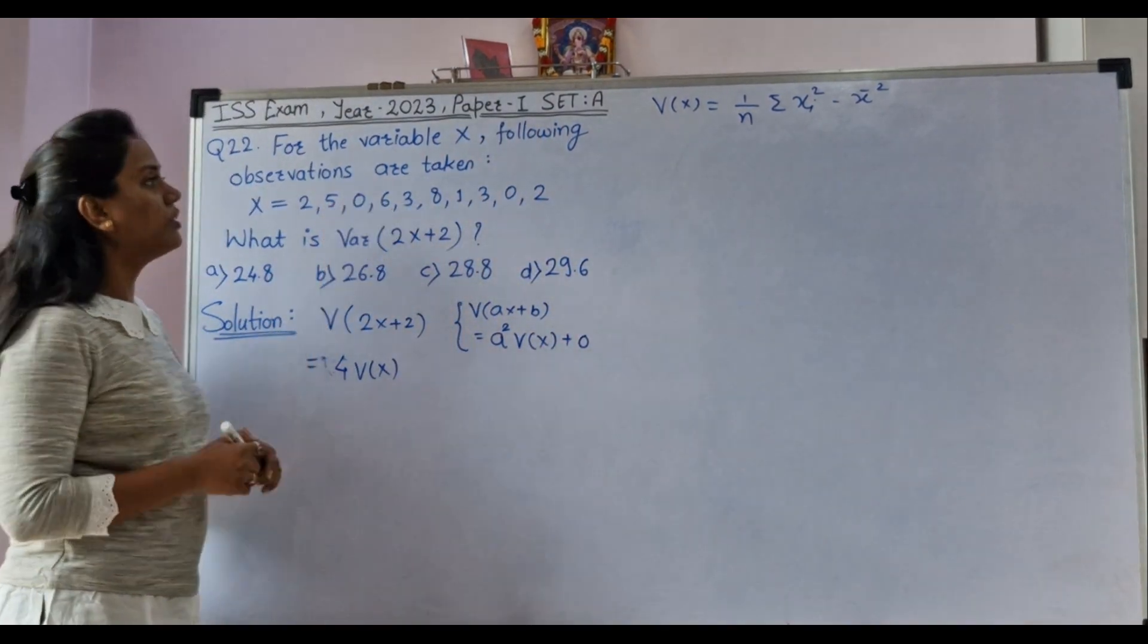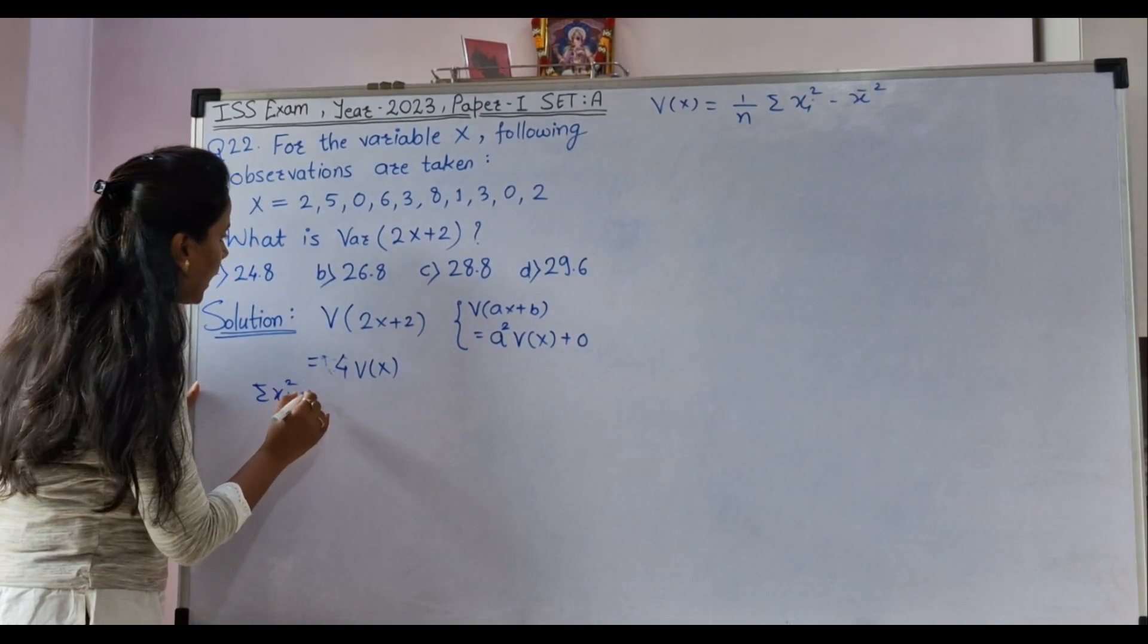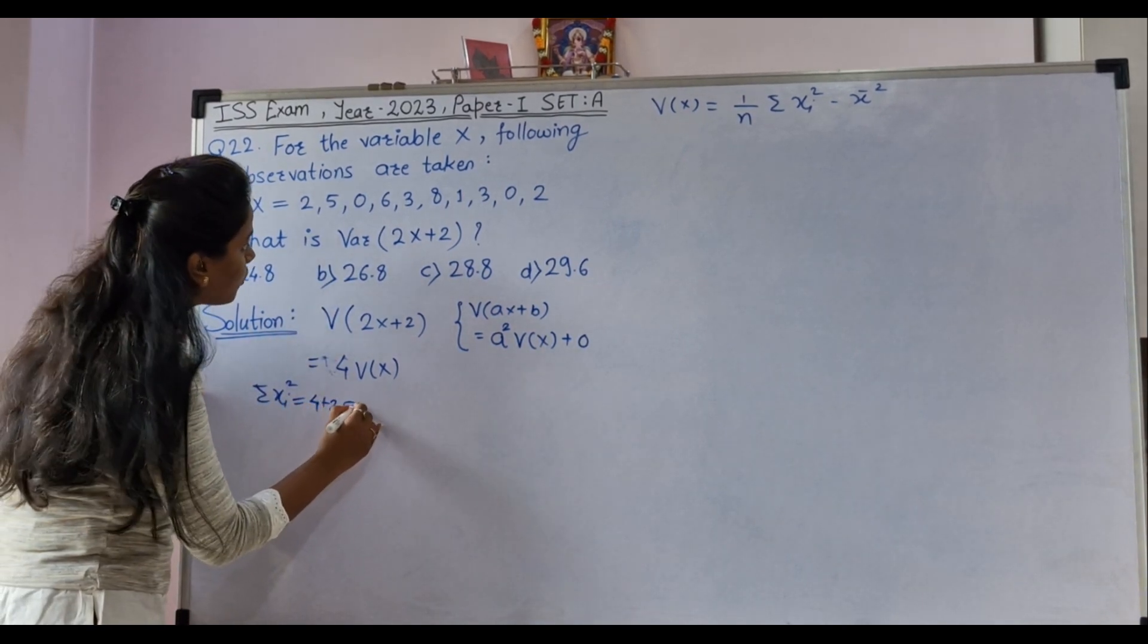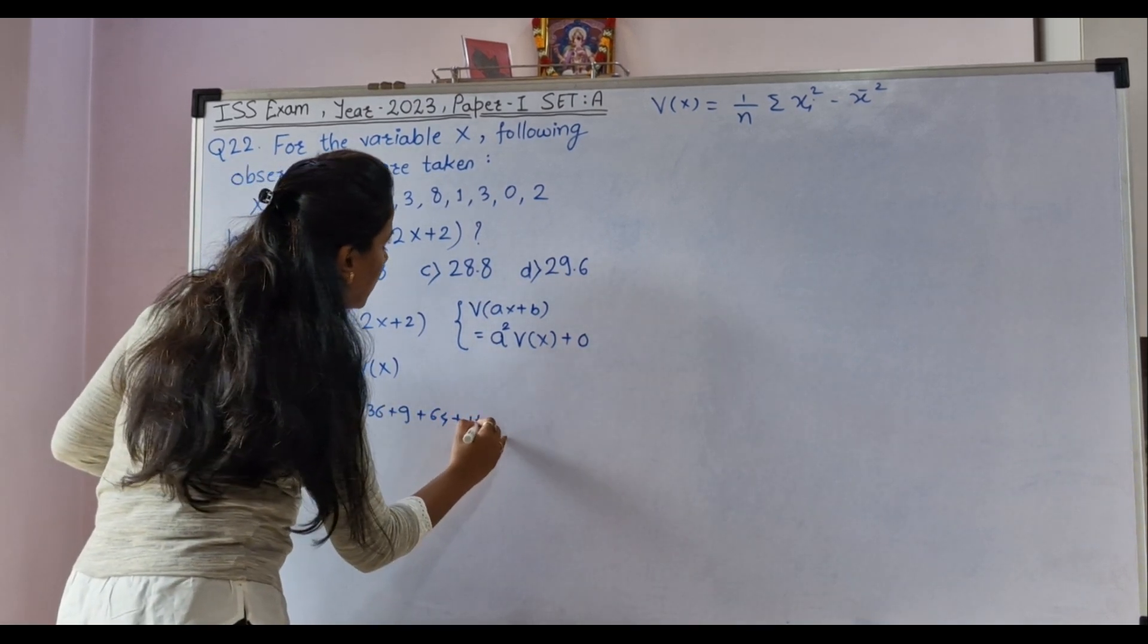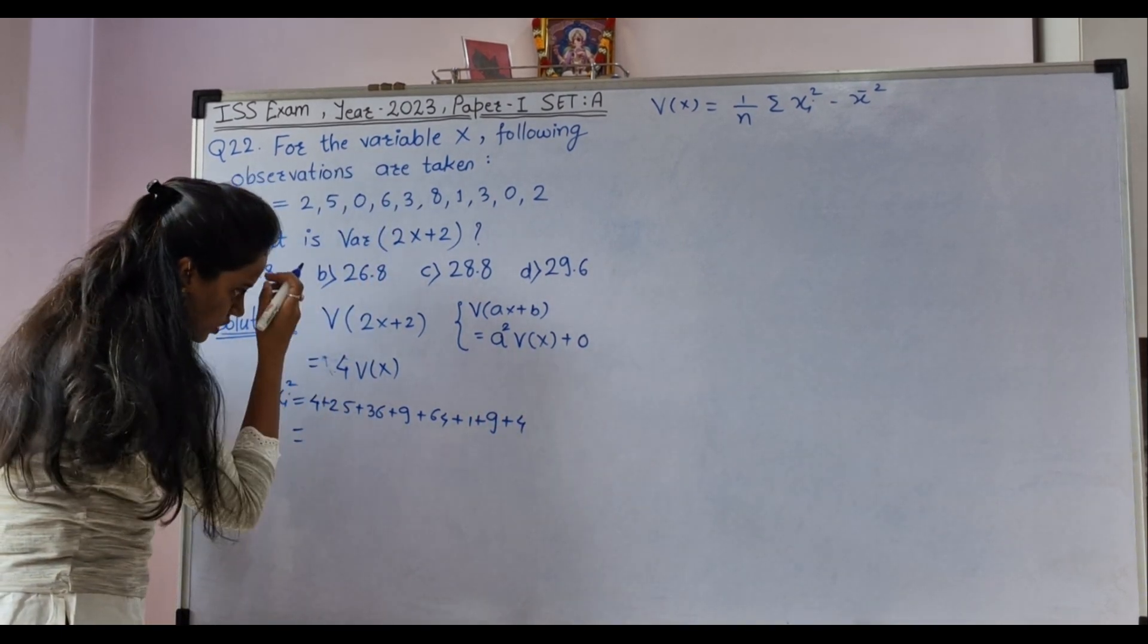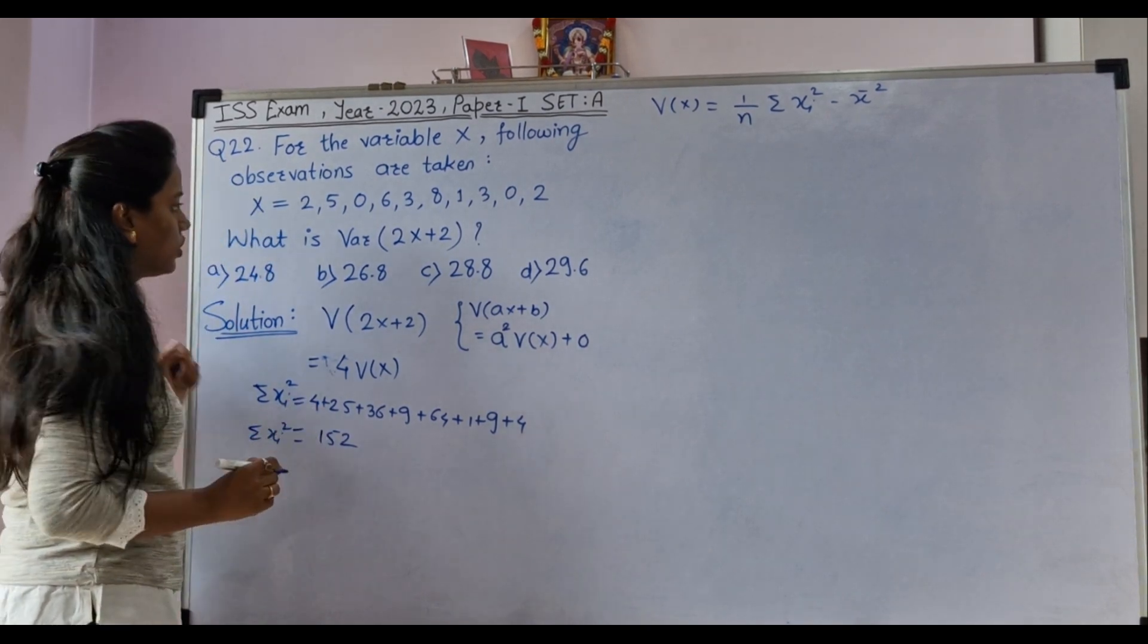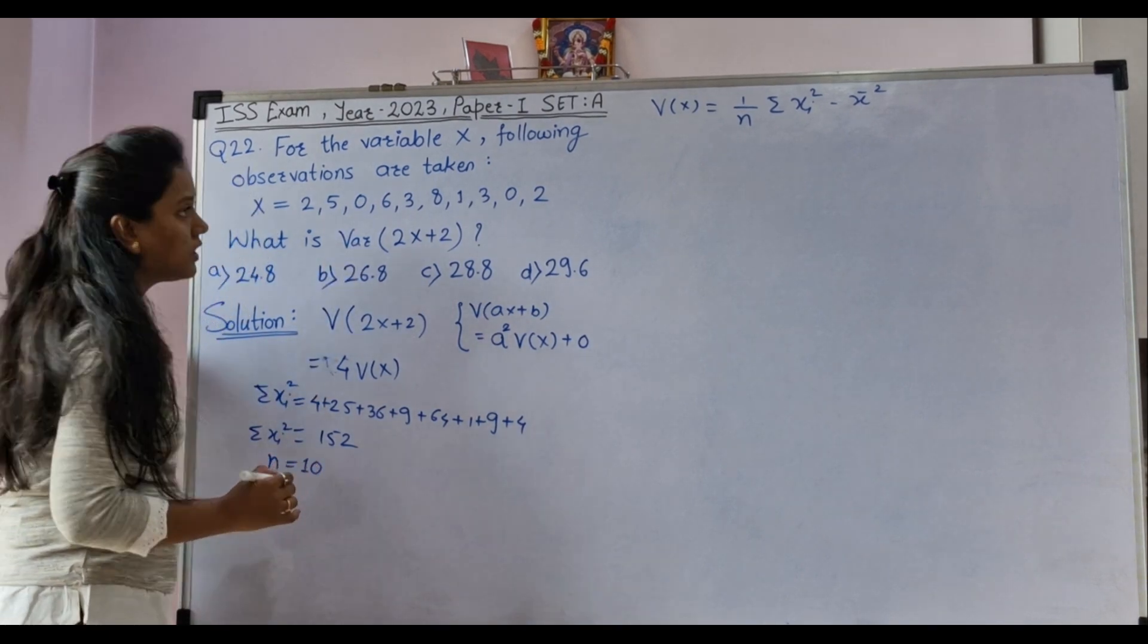Let's calculate it for our raw data. Summation Xi square - we have to take square of each quantity and add it. So, it is 4 plus 25 plus 36, 9, 64, 1, 9 plus 4. So, its total is 152. Summation Xi square we got. Here our total number of observations are 10.